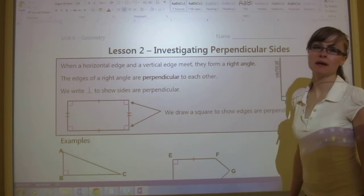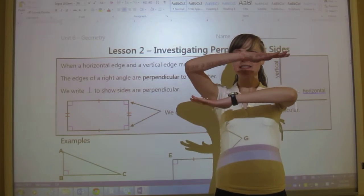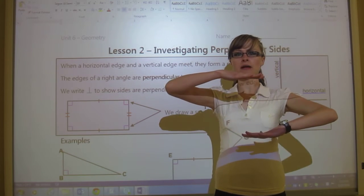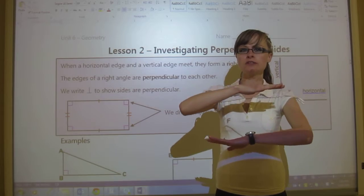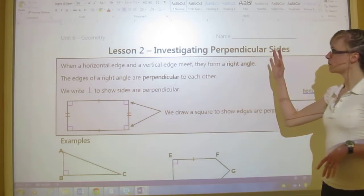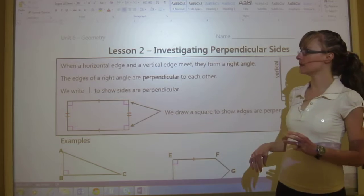So we've looked at parallel sides, which are lines that never ever touch this way. So they're two horizontal or two vertical lines. Now we're going to look at perpendicular lines.